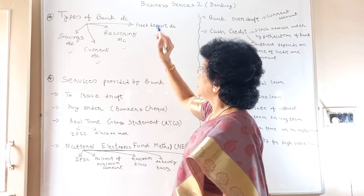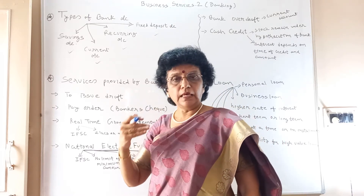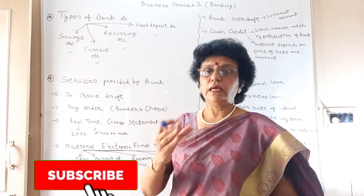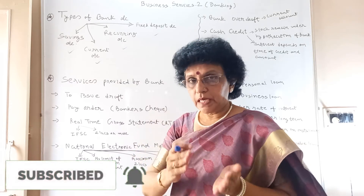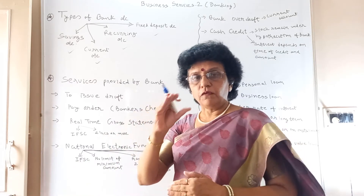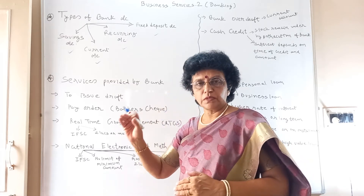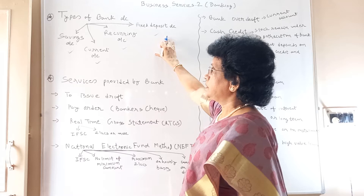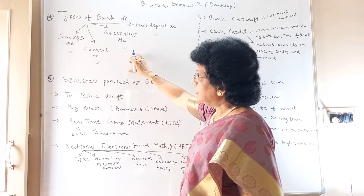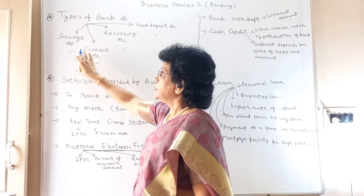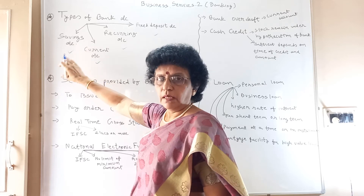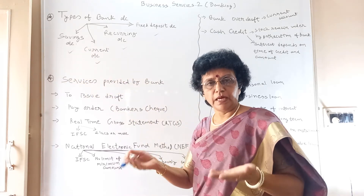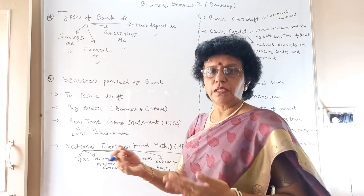Next is the fixed deposit account. The old people, the retired people, and housewives — if they have any extra money, they keep that money for a fixed period of time deposited in the bank. Here the maximum rate of interest is given. In comparison: fixed deposit gives maximum interest, recurring a little less, current gives no interest, and savings gives a minor rate. Like this, different types of customers are attracted by the bank by giving them various options.